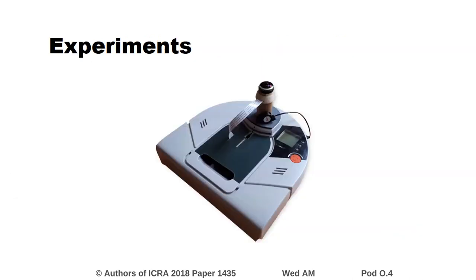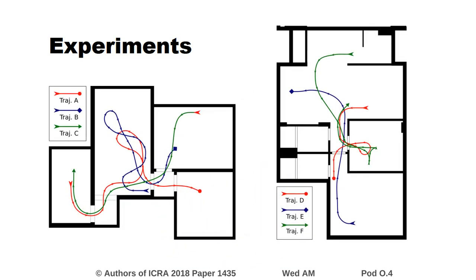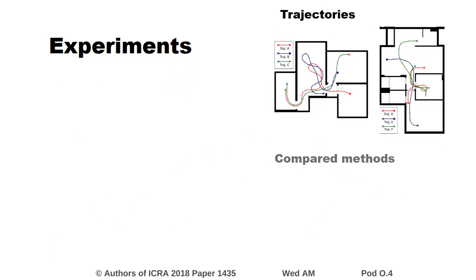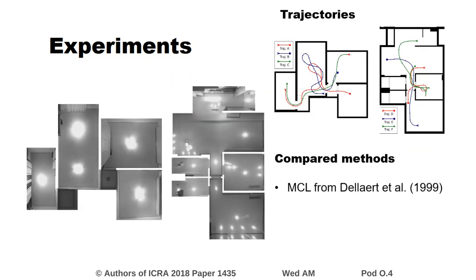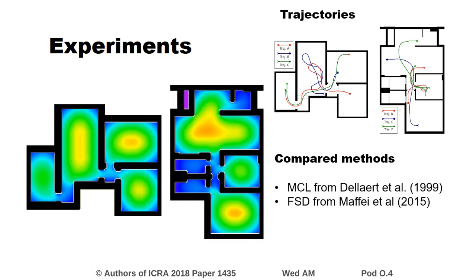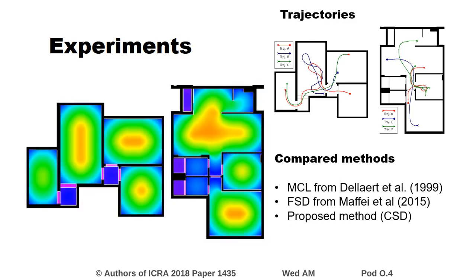To demonstrate the feasibility and effectiveness of our method, we used an Aneato XV12 coupled with an upward-facing camera. We recorded six trajectories across two different apartments and compared the following methods: the original Monte Carlo localization from De Laerte et al. that uses a mosaic of the ceiling; the free space density from Afe et al. that uses a forward-facing laser to reconstruct the environment; the proposed method, ceiling space density; as well as pure motion to evaluate the contribution of the observation step.